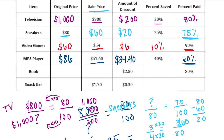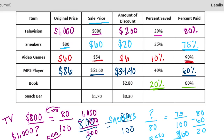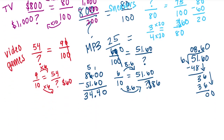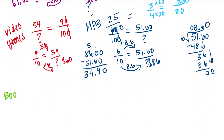For the book: the percent paid was 80%, which means the percent saved is 20%. We only know the amount of discount was $2.80. So 20% equals $2.80 out of some total — we need to find the original price.